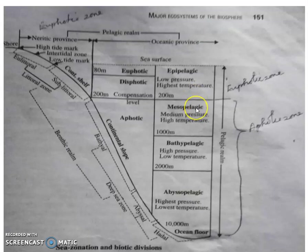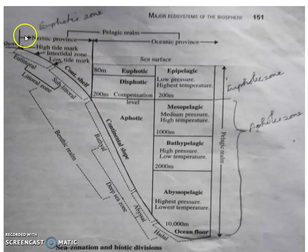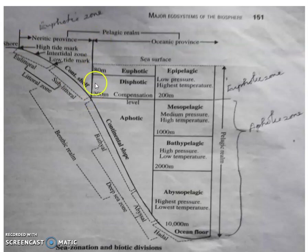This diagram gives a more detailed labeled image of the realms. The pelagic realm is divided into two areas: the neritic province, which is the shore or coastal side area, and the oceanic province. The neritic province extends from the land to where the water column reaches 200 meters depth vertically. The remaining area is called the oceanic province.